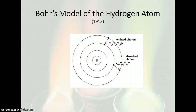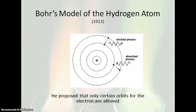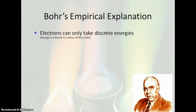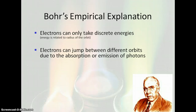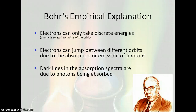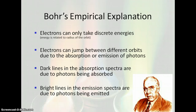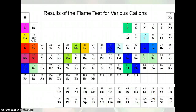Bohr's model of the atom described electrons orbiting the nucleus in orbits. For hydrogen, when we calculated everything, hydrogen would absorb a certain amount of energy and then release it, emitting a photon. He described this by saying that electrons can only have specific discrete energy levels, and the energy is related to the radius of the orbit. The electron can jump between different orbits due to the absorption or emission of photons. Dark lines in the absorption spectra are due to photons that are absorbed, and bright lines in the emission spectra are due to photons being emitted.